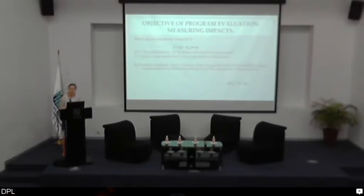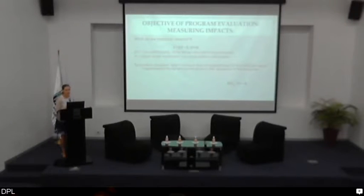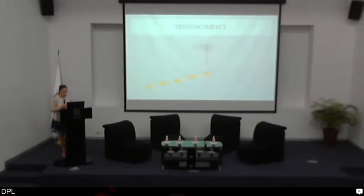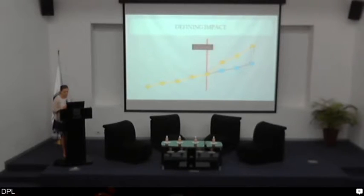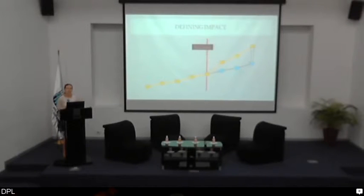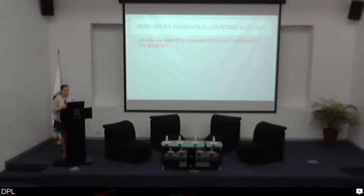Right away we come to the famous evaluation problem: we can't observe people who participate in the program and also observe what would have happened to them if they hadn't participated. We call that the counterfactual. So we don't observe Y-zero for those who do participate. In the picture, the yellow line represents people who participate — we observe them before and after the program — but we don't know what would have happened without the program. That's modeled by the blue line, the counterfactual. Estimating the counterfactual is really the key in program evaluation.